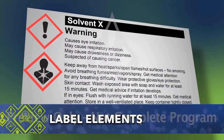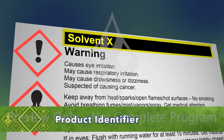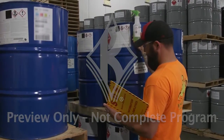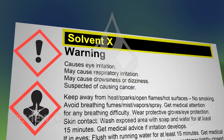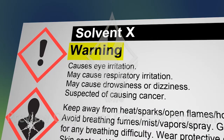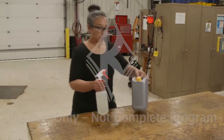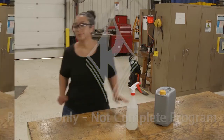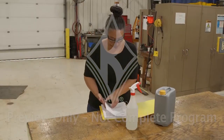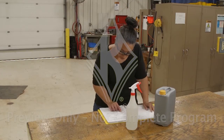Each label on a shipped container of a hazardous chemical must have six specific elements. The product identifier is the name or number used for the chemical, which can include an official name as well as any other names, and must match the one found on the SDS and in the workplace chemical inventory. The signal word tells you how dangerous the hazard is — danger is used for more severe hazards, and warning is used for less severe hazards. A hazard statement describes the nature of the chemical's hazards and may include how dangerous the hazard is. An example is 'fatal if inhaled.' The hazard statement is specific to the chemical hazard classification category, meaning you should always see the same hazard statement for the same classification category, regardless of what the chemical is or who produces it.